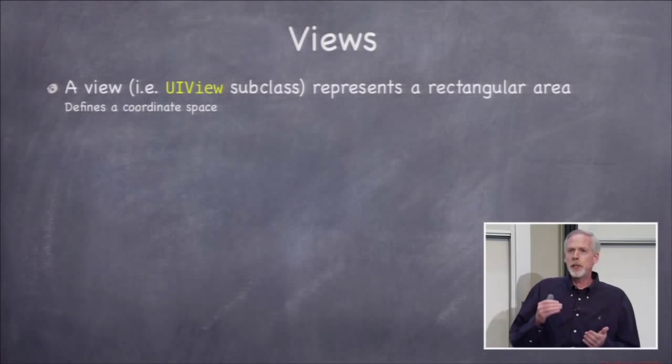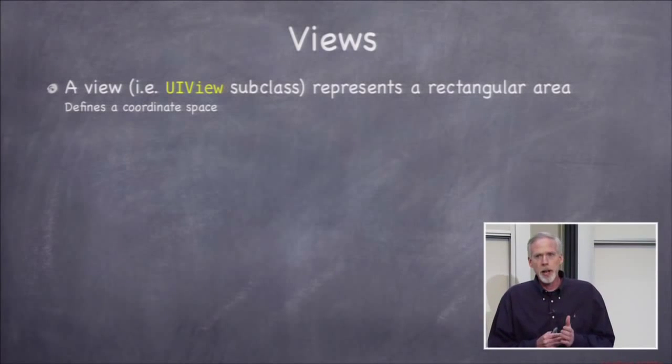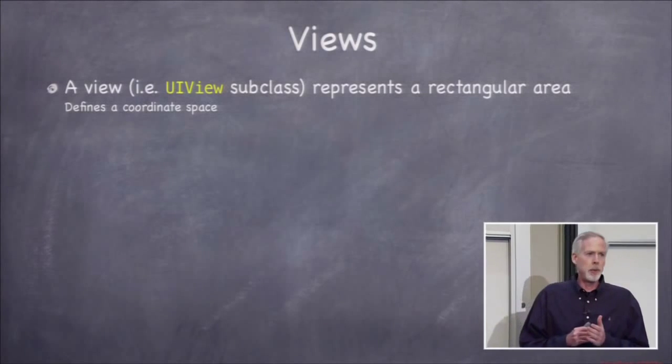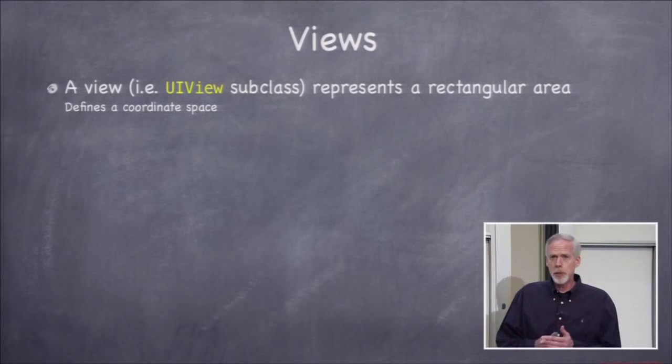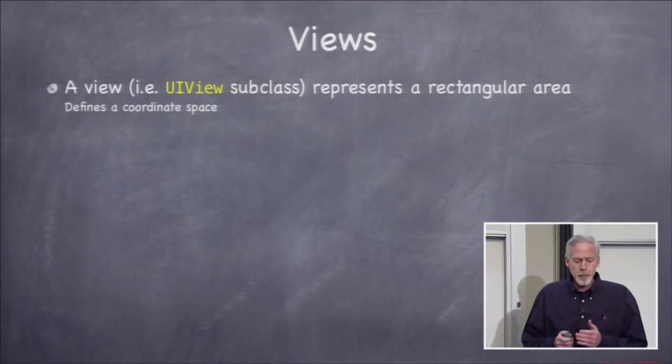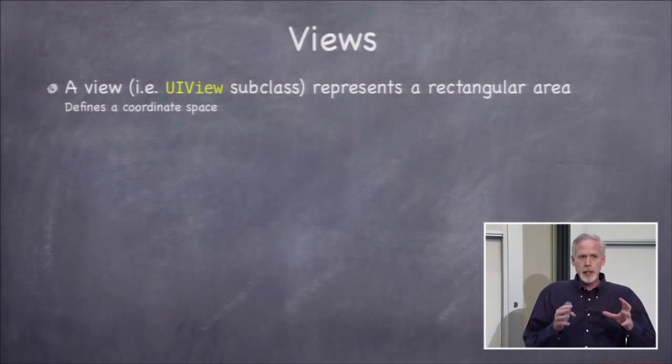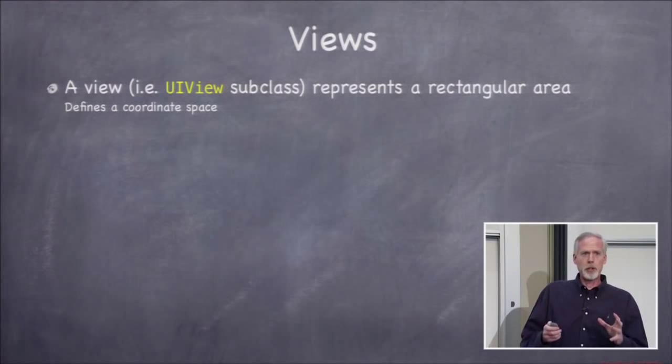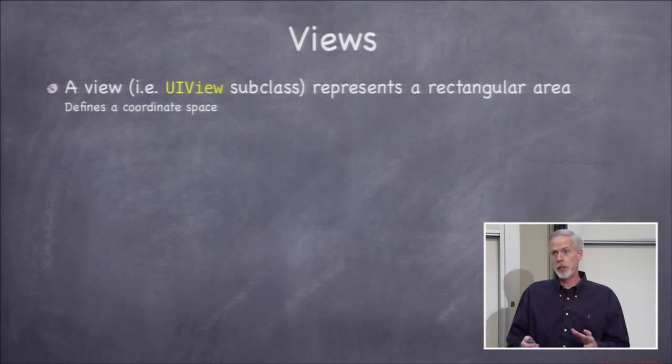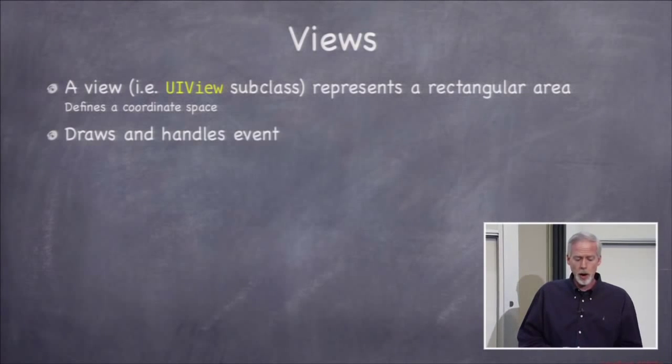All right, so a view is of critical importance in iOS. It's right at the heart of all the drawing we do. You've used a ton of views already. Buttons are views. Labels are views. It's basically the building block that represents a rectangular area on screen. It defines a coordinate space, a coordinate space you can draw in and a coordinate space that you can get touch events in and understand where they are.